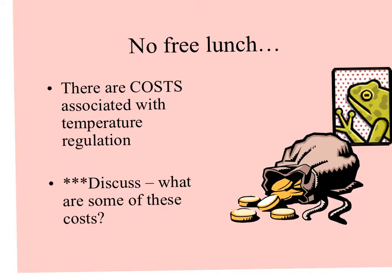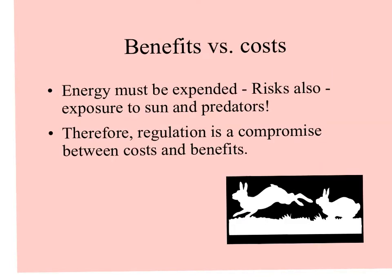There are costs associated with temperature regulation. Think about a frog or a lizard — an animal that has to bask to obtain heat. One cost would be energy to move to such a place, but another might be even greater: by being exposed to the sun, you're also much more visible to predators. So regulation of temperature for any organism is a compromise between the benefits and the costs.